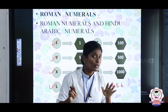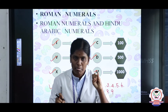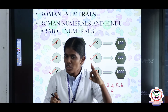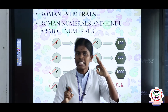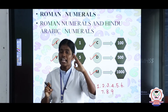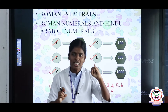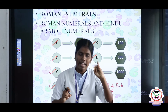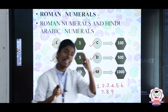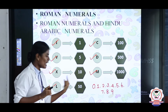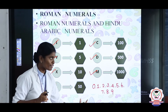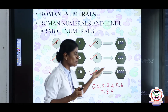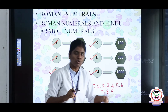What are the 7 Roman numerals? I, V, X, L, C, D, M. I is 1, V is 5, X is 10, L is 50, C is 100, D is 500, and M is 1000.